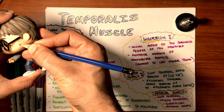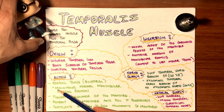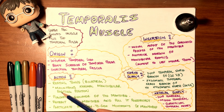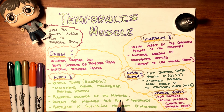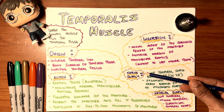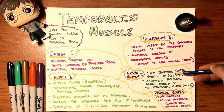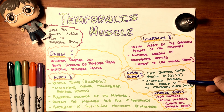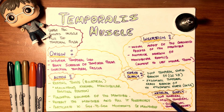In resting tonus, temporalis maintains the normal mandibular resting position — when you sleep or sit quietly. It also allows elevation of the mandible, retracts the mandible posteriorly, and participates in side-to-side movements. Nerve supply is the deep temporal branch and the zygomaticotemporal nerve, both branches of the trigeminal nerve. Arterial supply is the deep, middle, and superficial temporal arteries.